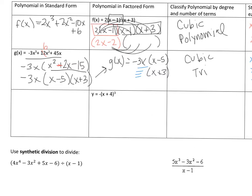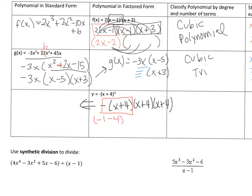For this one, write in standard form — I'm going to expand this. So it's negative 1 times x plus 4 times x plus 4 times x plus 4. You want to multiply through by negative 1, so it's negative x minus 4. Then I'm going to expand x plus 4 squared, which turns into x squared plus 8x plus 16.